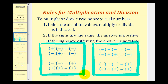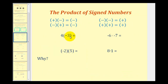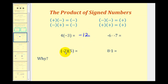Let's take a look at some examples, and then we'll also try to justify why these rules are true. Four times negative three — we have a positive times a negative, so this will be negative 12. Here we have negative two times five, a negative times a positive. That product is also negative, so this will be negative 10.